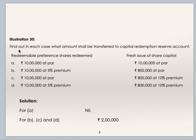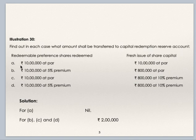Now we go to Illustration 30: find out in each case what amount shall be transferred to capital redemption reserve account. When redemption is out of profits of the company, the nominal value of shares to be redeemed should be transferred to the capital redemption reserve account. If redemption is out of fresh issue of shares, nothing is transferred to CRR because there is no reduction of capital. Case 1: redeemable preference shares to be redeemed is 10 lakhs at par, and fresh issue of share capital is 10 lakhs at par. Capital paid back is 10 lakhs and fresh capital raised is 10 lakhs, so nothing is transferred to CRR — there is no reduction in capital.